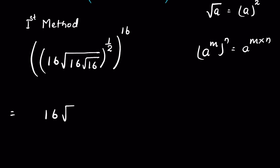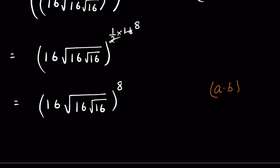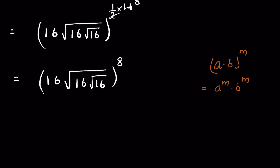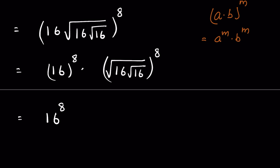This is equal to 16 times √16 times √16, all under a square root, then whole raised to the power of 1/2. Since 2 times 8 is 16, it becomes whole raised to the power of 8. Using the identity (a×p)^m = a^m × p^m, this equals 16^8 times √16 times √16 under square root, whole raised to the power of 8.